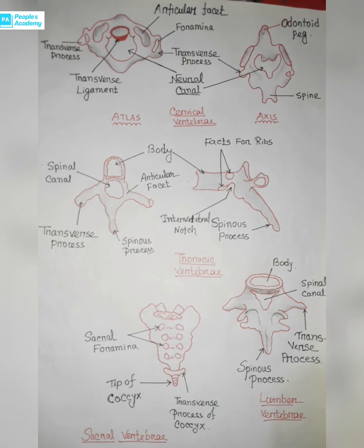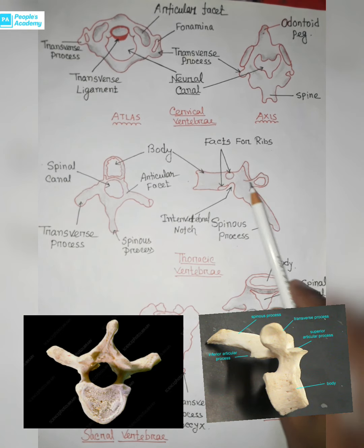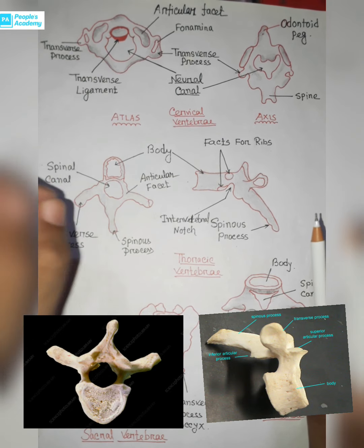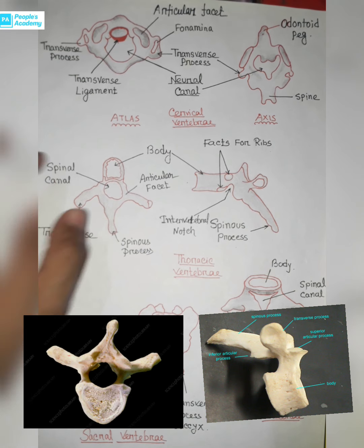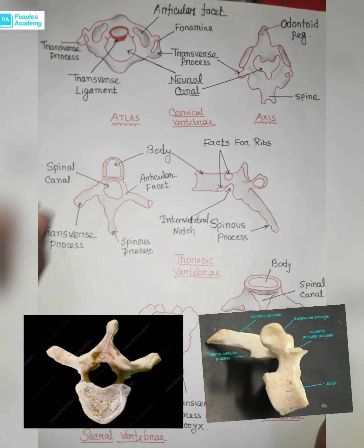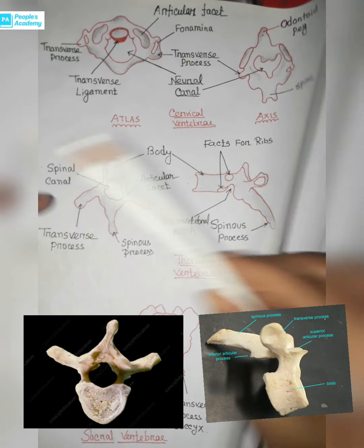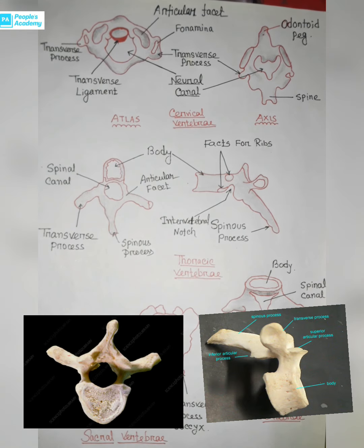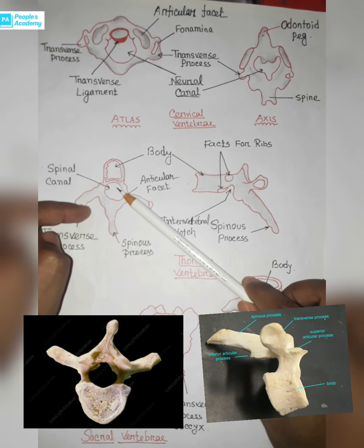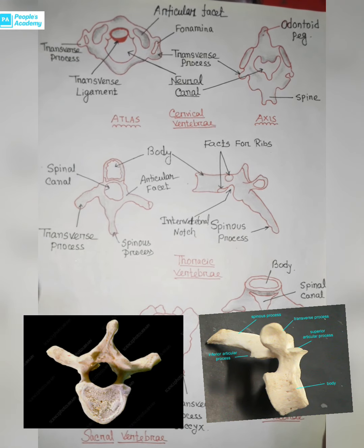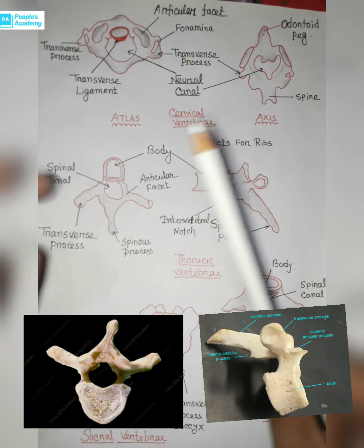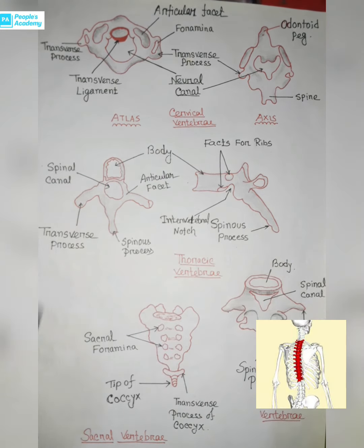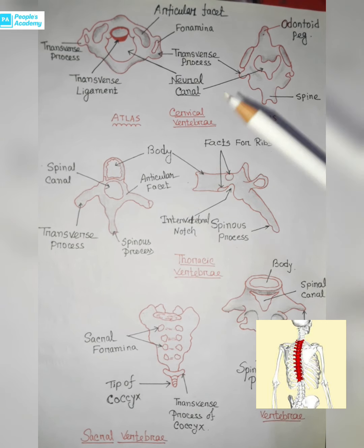Coming to the thoracic vertebrae: thoracic vertebrae are larger than cervical vertebrae. There are 12 thoracic vertebrae present in the human body. These are located in the chest region and contain sites for the attachment of ribs, as discussed in detail in a previous video.